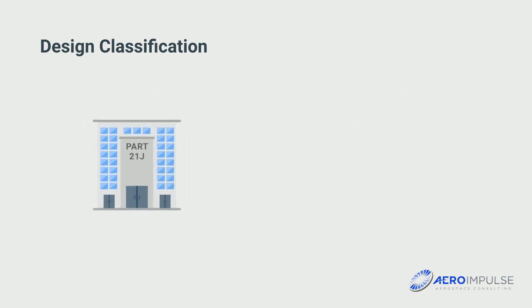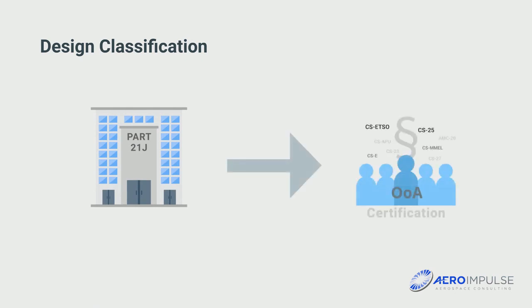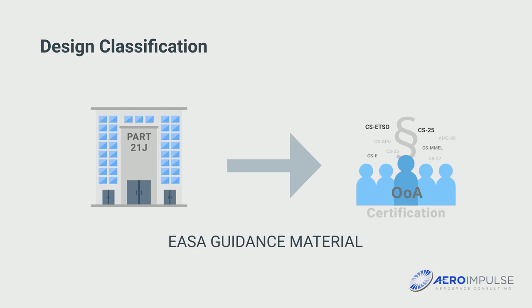Classification is carried out within the design organization by the Office of Airworthiness. The following illustration from the EASA guidance material is used as a guideline for classification.